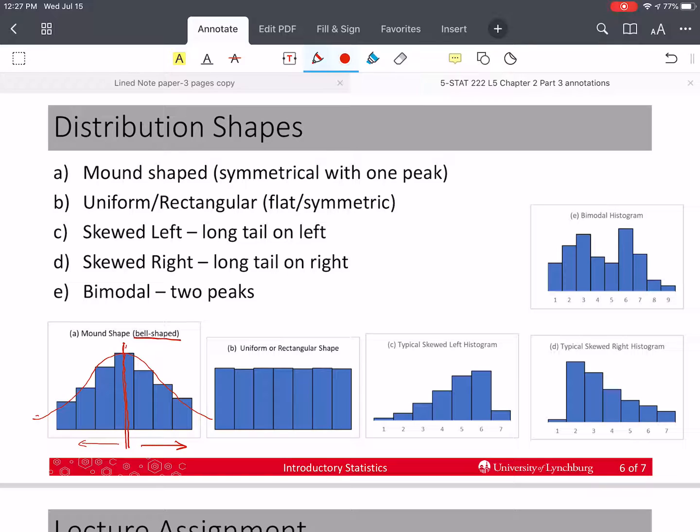Now the next distribution is called the uniform or rectangular shape distribution, and it also is symmetric. Again, if I take a line down the middle, and I fold it down that line, the two halves are going to match up. They are mirror images of each other.